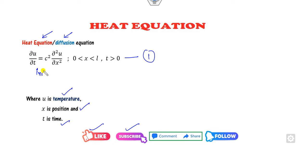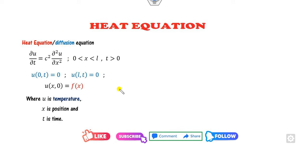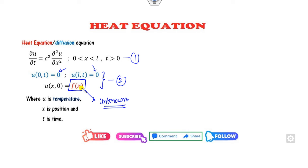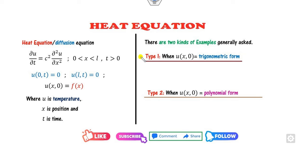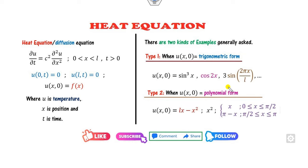To solve this equation we need some initial conditions. The unknown function f(x) determines how we solve the problem. Based on the nature of f(x), I divide this into two types: type 1, where f(x) is trigonometric (like sin x, cos² x), and type 2, where it is a polynomial form like Lx − x², x², and so on.